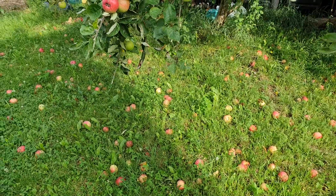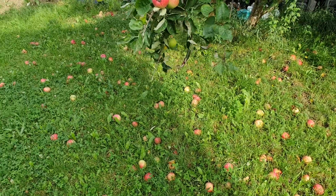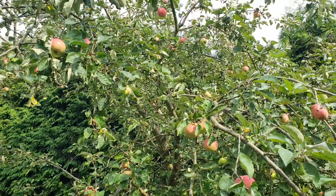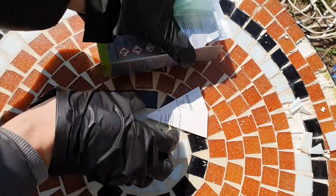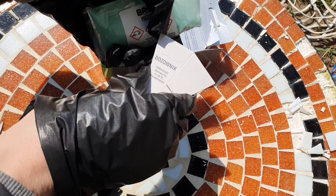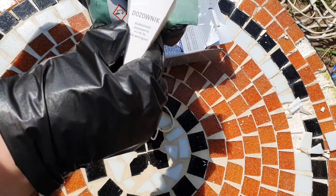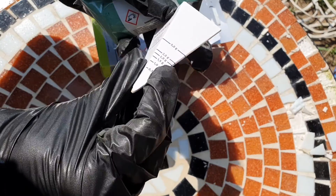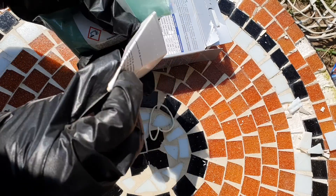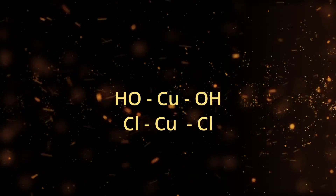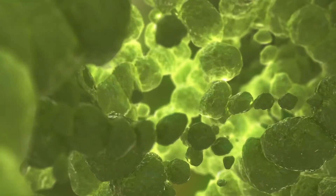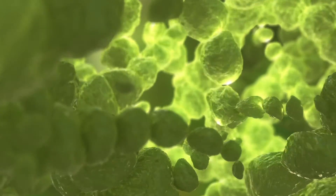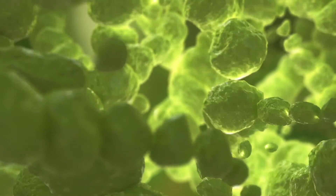Preparations containing copper are used not only in industrial crops but can also be used in amateur and even organic crops. The product contains copper oxychloride, a substance with high fungicidal and bactericidal effectiveness. It is used preventively and to combat fungal and bacterial diseases of fruit trees and shrubs.